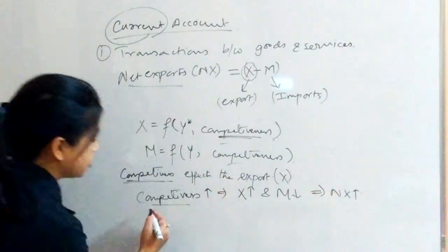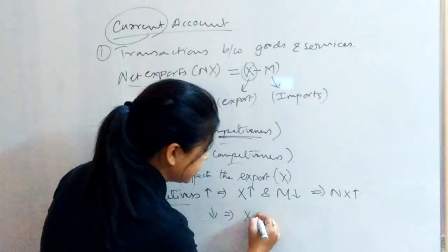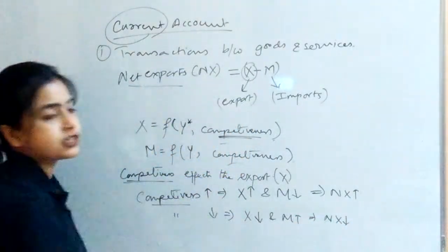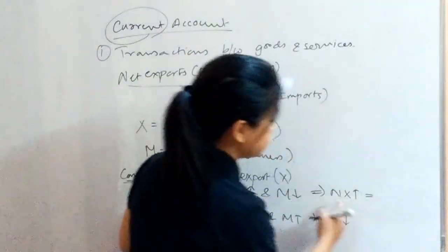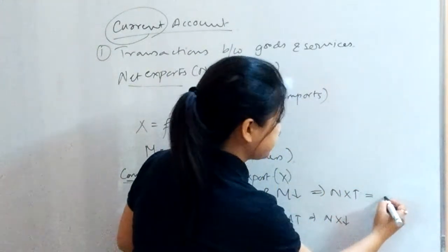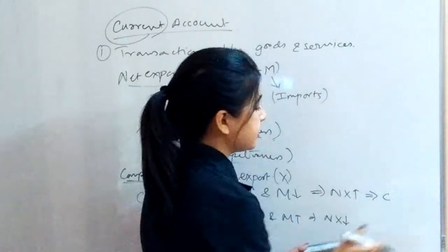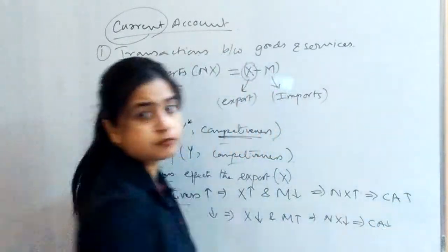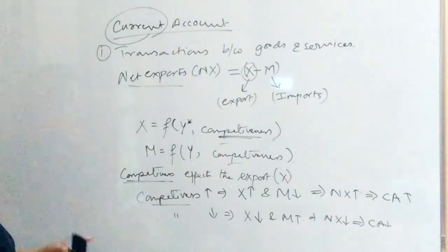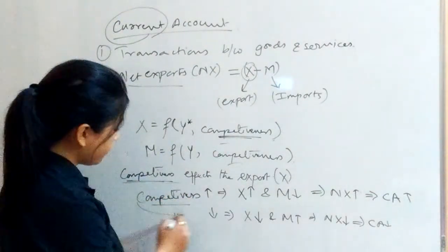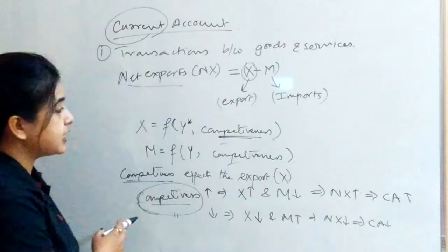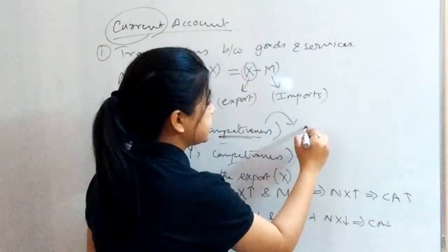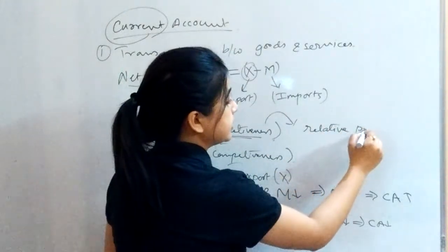Vice versa also holds: if competitiveness reduces, then exports reduce while imports increase, and ultimately net exports falls. So when net exports increases, CA increases; when competitiveness falls, CA falls. Competitiveness is determined by relative prices.